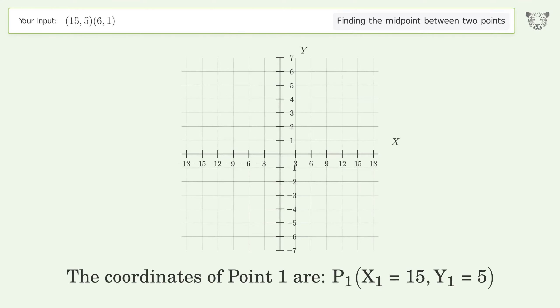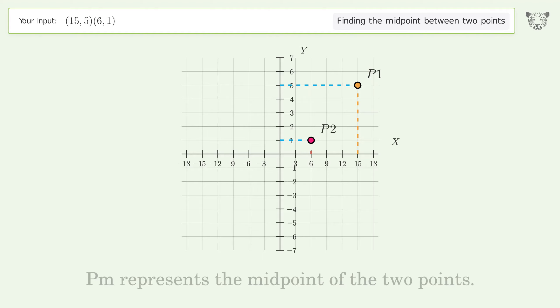The coordinates of Point 1 are x₁ equals 15, y₁ equals 5. The coordinates of Point 2 are x₂ equals 6, y₂ equals 1. Pm represents the midpoint of the two points.